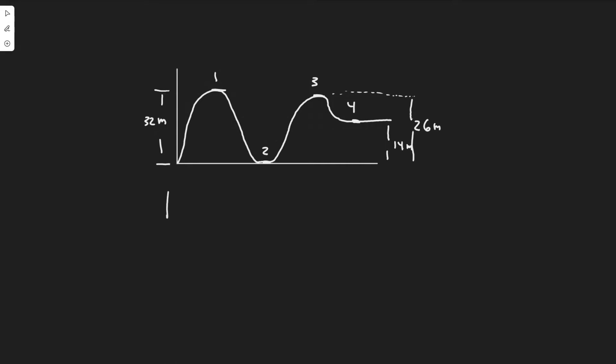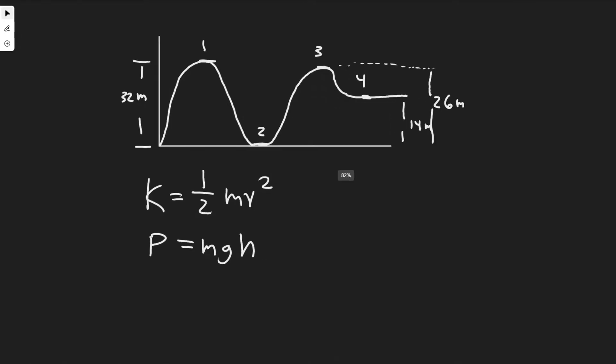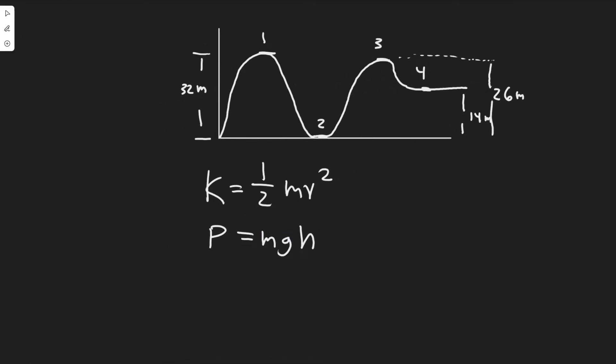Basically we're going to be using the conservation of energy which involves two types of energy. First we have kinetic energy, K equals one half MV squared. So one half times the mass of the object, in this case a roller coaster car, times its velocity squared. Then you also need to know about potential energy, P equals MGH. So it's mass times G which is gravity, 9.8, times height. Height is relative to a point. In this case we're going to do it relative to here.